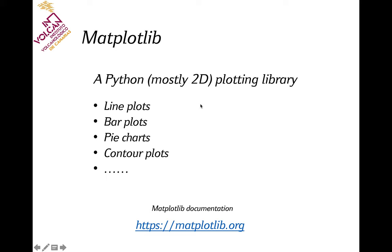This has been a very short introduction — there are a lot of possibilities. Matplotlib is basically a 2D plotting library. There is some limited capability for three-dimensional plots, but other libraries are specifically devoted to 3D plotting. Beyond line plots, matplotlib offers a wide range of options including bar plots, pie charts, and contour plots. I suggest taking a look at the documentation, which has countless examples. In the next lesson, we will start specifically talking about the inverse problem.